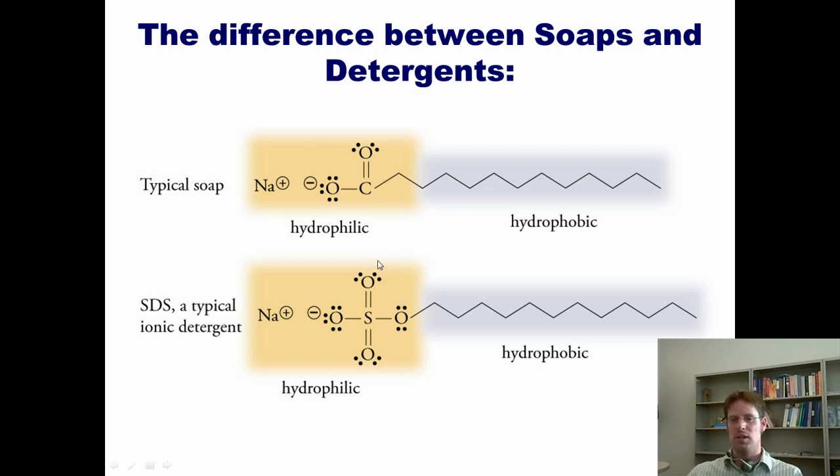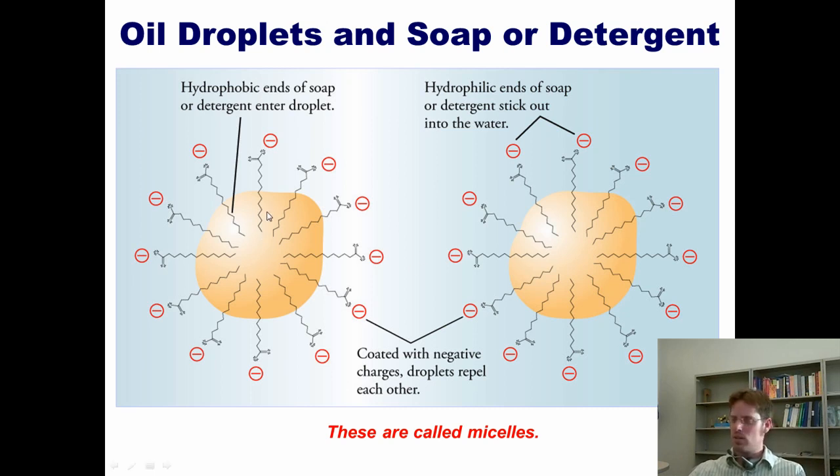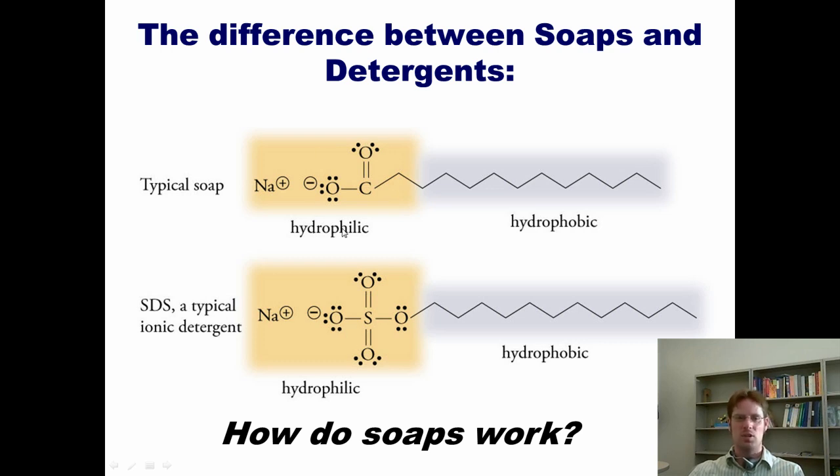Functionally, they do function differently. You might ask the question, how do soaps work? Soaps and detergents both have a carboxylate or sulfonate head. This head is very polar, which means it likes water. That is, it's hydrophilic. Both soaps and detergents also have big, long hydrocarbon chains. These chains are very non-polar, which means that they don't like water. They're hydrophobic.